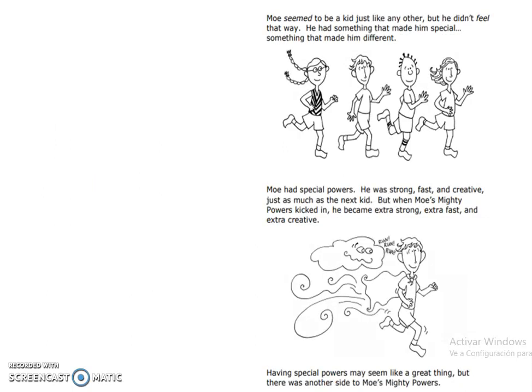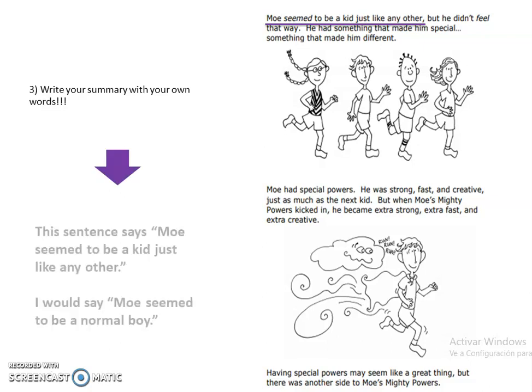Now, look at this page again and the third tip. It says, write your summary with your own words. Look at the first sentence. It says, most seem to be a kid just like any other. Now, when you're writing, use your own words because it will be easier for you to remember. So, instead of writing 'most seem to be a kid just like any other,' I would say, 'most seem to be a normal boy,' because it's shorter and easier to remember.